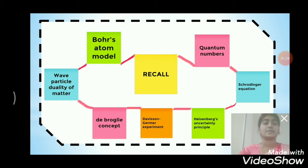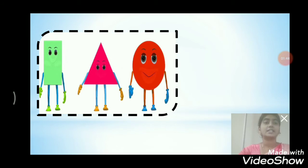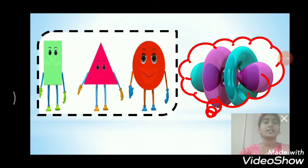Let's start. Before that, I will show you some images. First one — what is this? These are shapes: rectangle, triangle, and circular. The next image is the orbital. So I hope you would have guessed the topic — shapes of atomic orbitals.